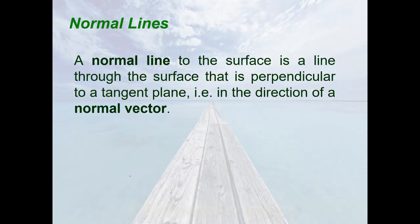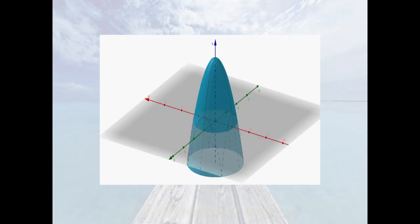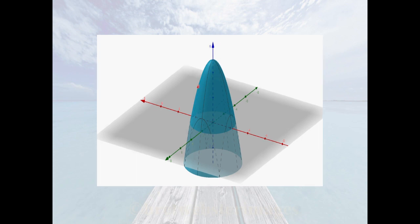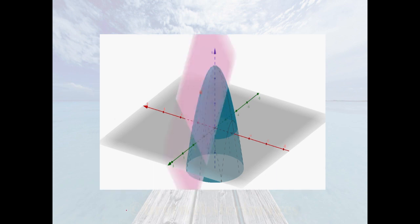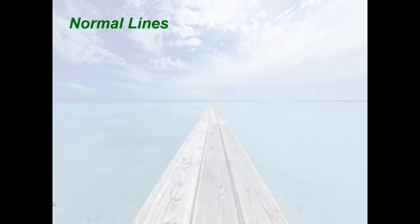Illustrating: consider this surface and a point on the surface, say (1, 1, 3). Consider the plane tangent to the given surface at that point. Then the normal line to the surface is a line perpendicular to the tangent plane. Observe that this line is in the direction of a normal vector. Thus, we will need the gradient of the function which defines this surface.